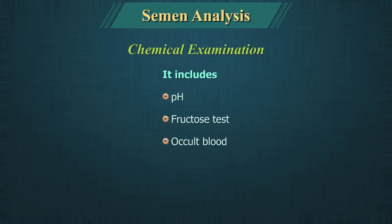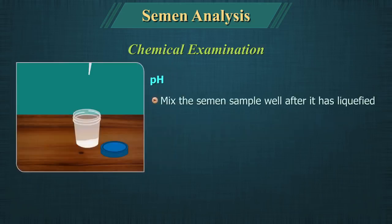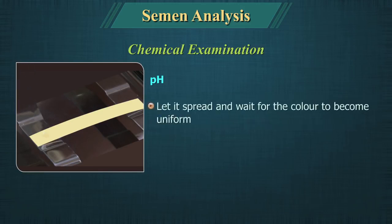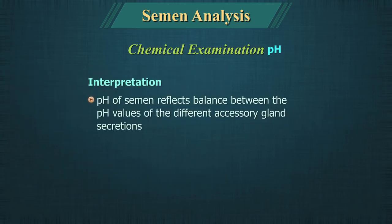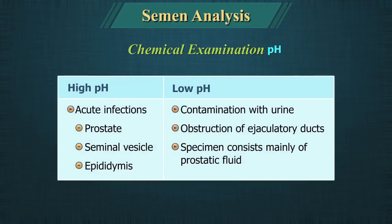Chemical examination includes pH, fructose test, and occult blood. pH: The pH is checked using pH paper in the range of 6 to 10. Mix the semen sample well after it has liquefied, take a drop and place it on the pH paper, let it spread and wait for the colour to become uniform, then compare with the calibration strip. The pH of semen reflects the balance between the alkaline seminal vesicular secretion and the acidic prostatic secretion.